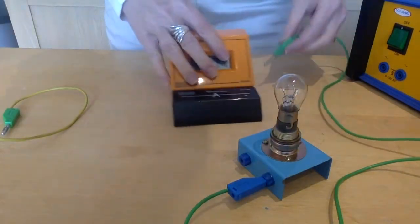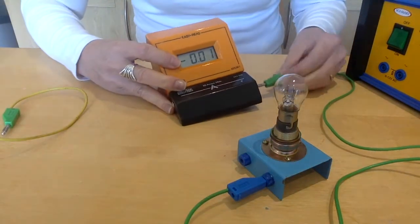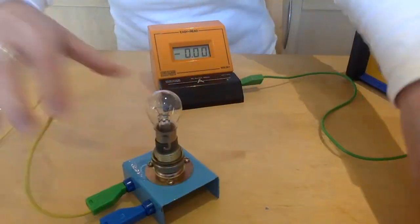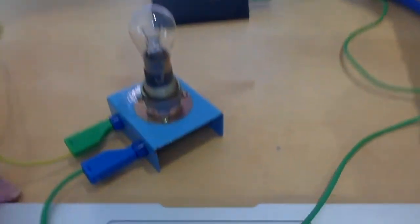Then I'm going to put the ammeter in series. All right so it's just one big loop.